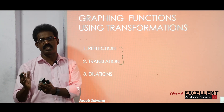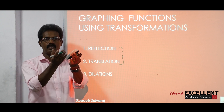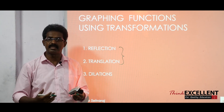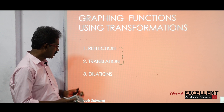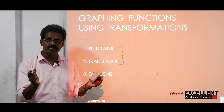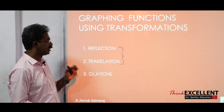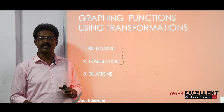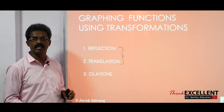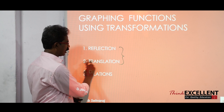Only the position changes — it moves to the right, left, above, or below, or it is a mirror image. But in the case of dilation, the graph shrinks or it expands. So there are three types of transformations: reflection, translation, and dilation. We are going to see them one by one in detail.